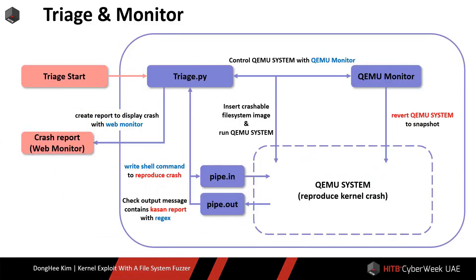We built the triager with QEMU and Python. On triager start, the triager Python script launches the QEMU system and inserts the crashable file system image. Secondly, triager writes shell commands to reproduce the crash with an input pipe. Thirdly, it checks the shell output command contains the custom KASAN report with an output pipe. Lastly, triager rolls back the QEMU system to a clean state with the QEMU monitor.